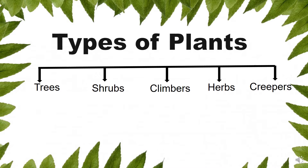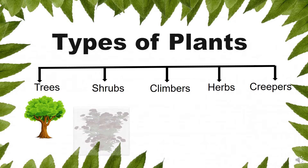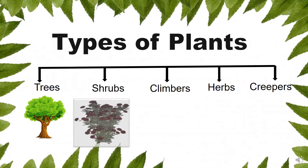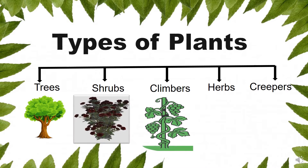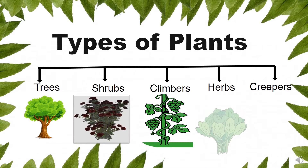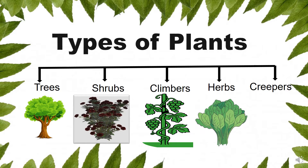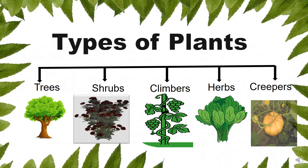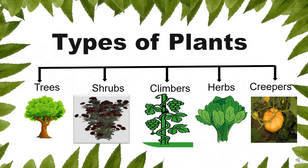There are basically five types of plants: trees, shrubs, climbers, herbs and creepers. Now in this video, let's learn more about each type of plant.